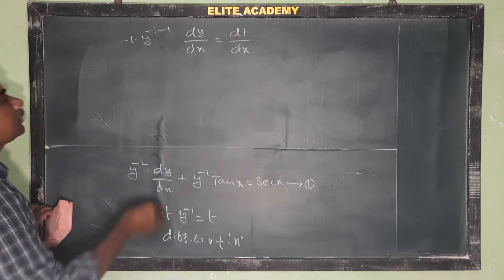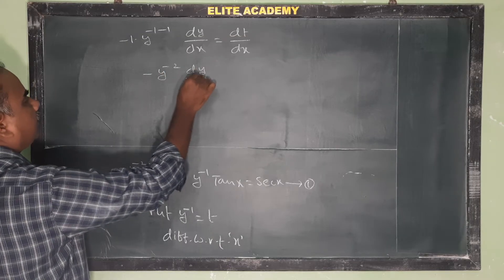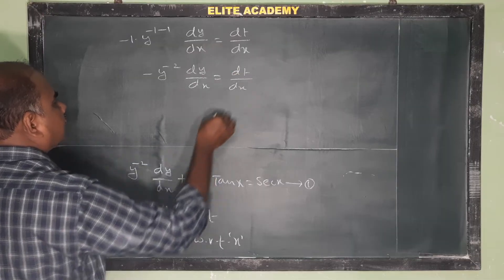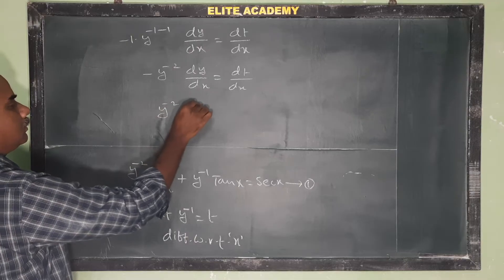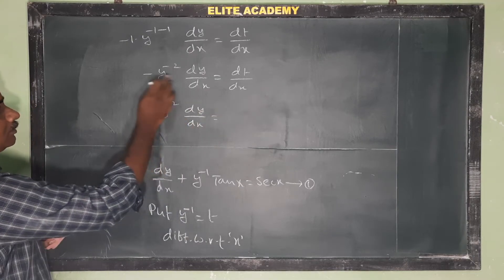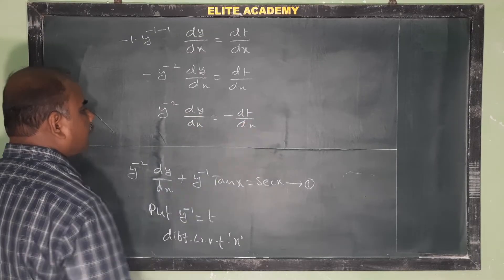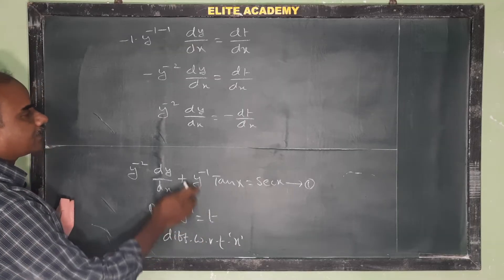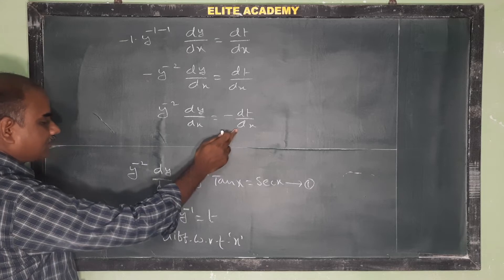So -y^(-2)·dy/dx = dt/dx, therefore y^(-2)·dy/dx = -dt/dx. And y^(-1) = t. So we have y^(-2)·dy/dx = -dt/dx.